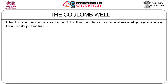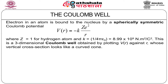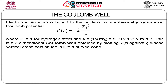The electron in an atom is bound to the nucleus by a spherically symmetric Coulomb potential, V(r) equal to minus k·z·e² by r. By spherically symmetric potential, I mean a potential which is constant over the surface of a sphere — it's a function only of r, and doesn't depend on theta and phi. If you put z equal to 1, this will describe the potential for a hydrogen atom. k is the Coulomb constant, equal to 8.99 × 10⁹ units. This is a three-dimensional Coulomb well obtained by plotting V(r) against r, whose vertical cross section looks like a curved cone.